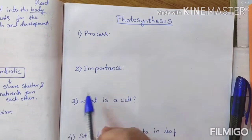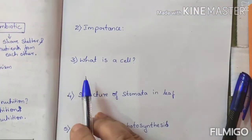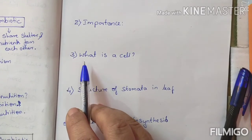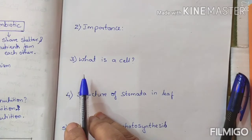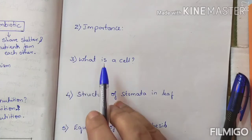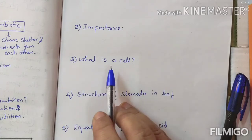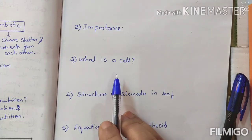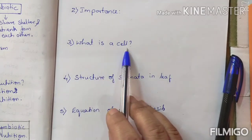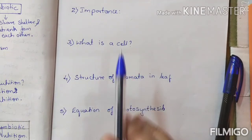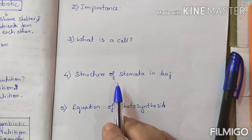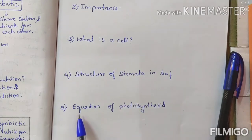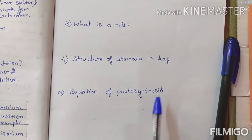We are going to learn the importance of photosynthesis. The leaf is called the food factory of the plant because the leaf is the place where food is going to be manufactured. Each cell in the leaf has a function to help the leaf do this food production. We are also going to learn about the basic unit — a cell — and then the structure of stomata in the leaf, which takes the main part in photosynthesis.